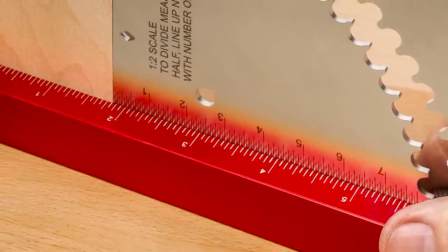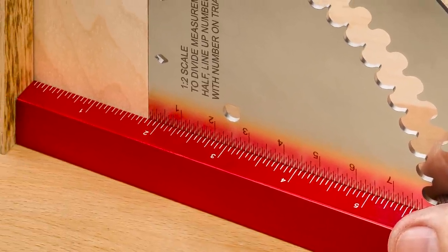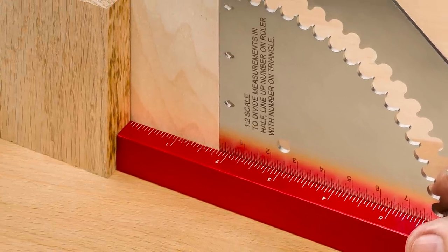Then there's the 1 to 2 ratio scale on the bottom of the triangle that allows you to set the tool to divide measurements in half.